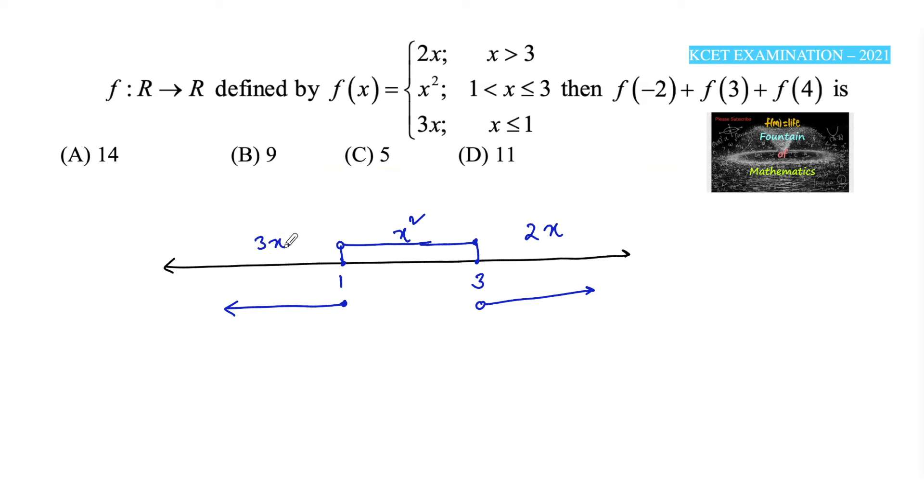These are the three different parts. Now we calculate f(-2) + f(3) + f(4). Minus 2 is below 1, so we use 3x. That's 3 times -2, which is -6.